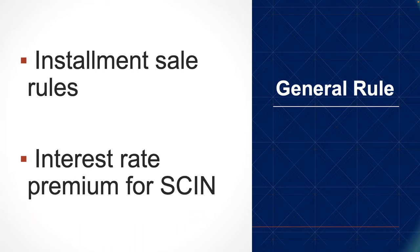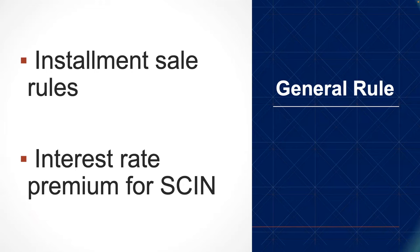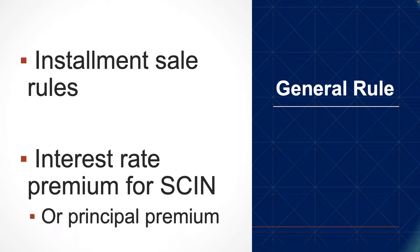If you want to have a valid SCIN, the IRS says that you've got to add an interest rate premium onto the applicable federal rate — which is the lowest rate that you can charge on these notes — to achieve a premium that reflects the fact that you may die before the note matures. The other way to do it is to bring in a principal premium, that is, increase the promissory note balance by some premium calculated using IRS tables and IRS formulas. It will avoid adverse gift and estate tax treatment only if the self-cancellation provision is properly designed and included in the purchase agreement, as well as in the promissory note itself.